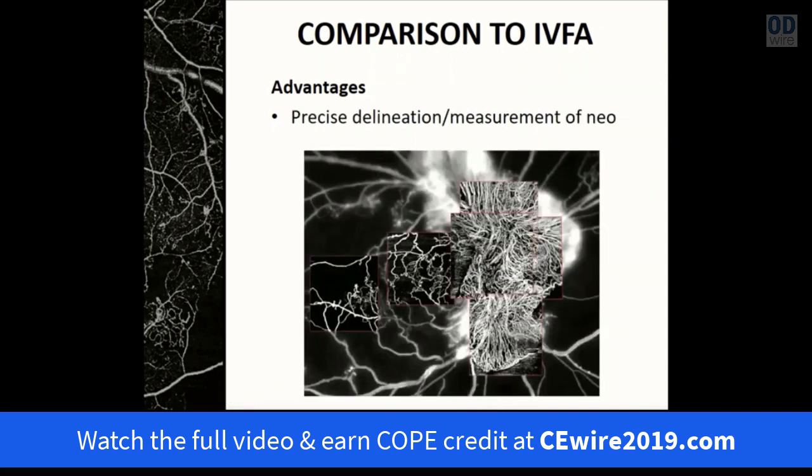OCT angiography also provides precise delineation and measurement of neovascular membranes. Importantly, leakage from neovascular membranes is not imaged with OCT angiography — and this is actually an advantage, since dye leakage in FA frequently obscures details of underlying neovascular membranes, making precise delineation of the membranes themselves difficult.